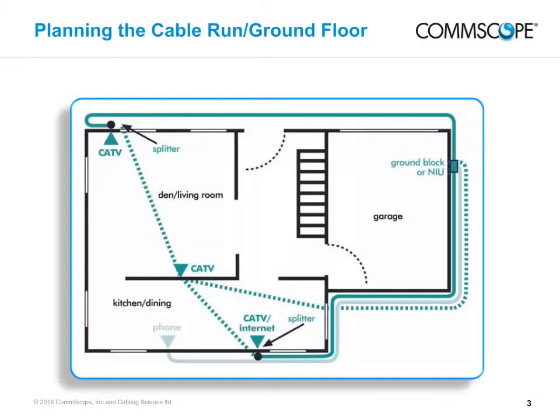Outlet locations are dictated by customer requirements — put them where they want them. Visually inspect every proposed outlet location. Be aware of the locations of electrical wires, plumbing, HVAC ductwork and other impediments. Use a stud finder to locate studs. As you plan your drops to specific locations within the residence, work within the interior walls whenever possible. This way, you avoid installation headaches like trying to push cable through insulation or around windows.